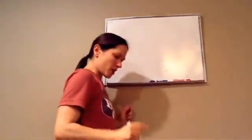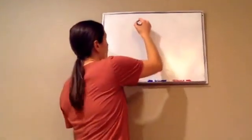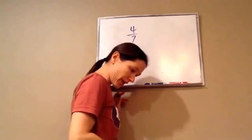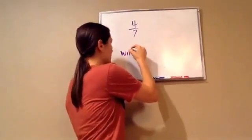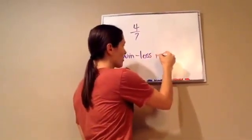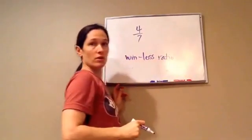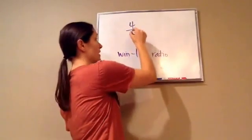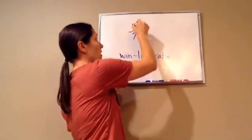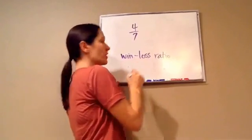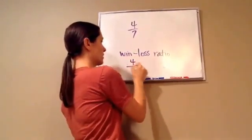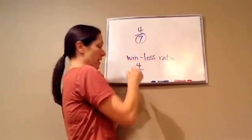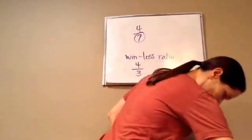Listen to this one. The team won 4 out of 7 of its games and lost the rest. What is the win-loss ratio? 7 is how many games they played. They won 4 out of 7, so the win-loss is 4 out of 3. See how they try to trick you? You've got to pay attention to that.